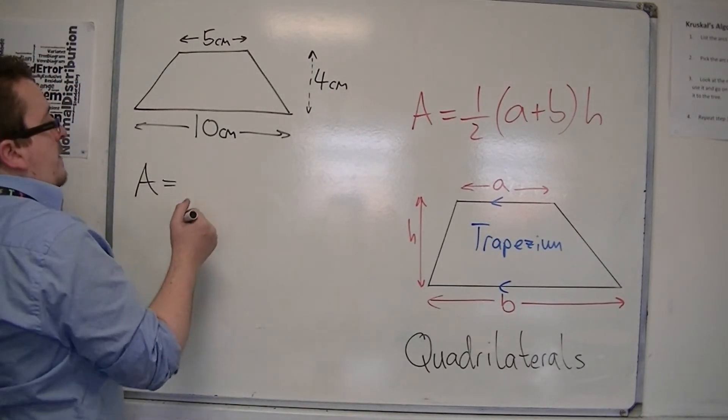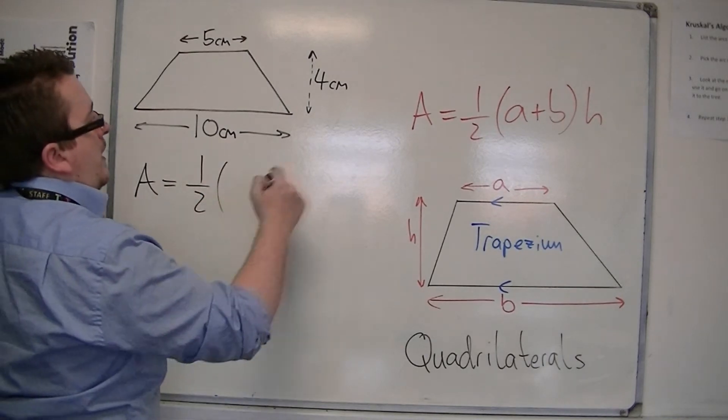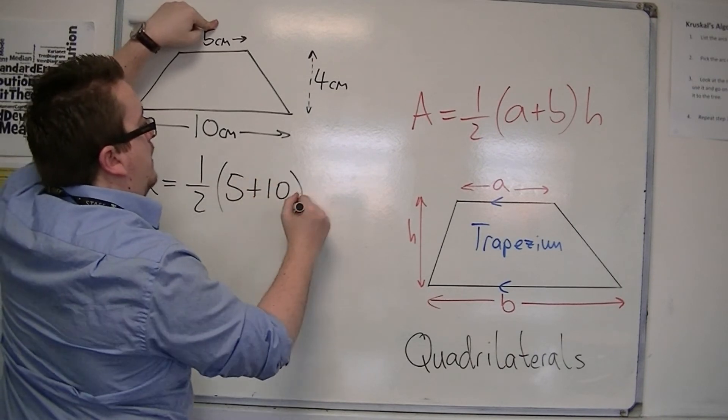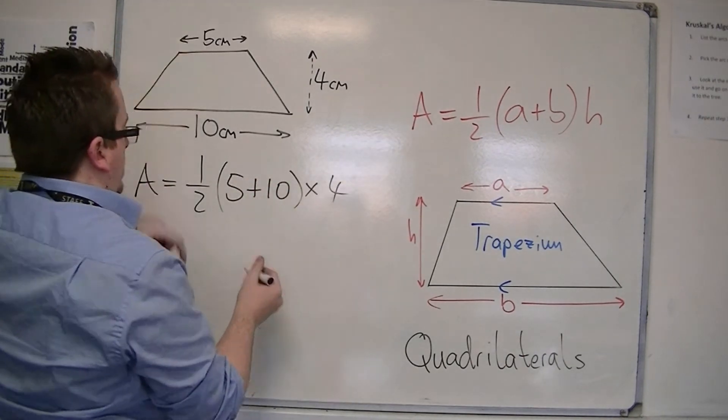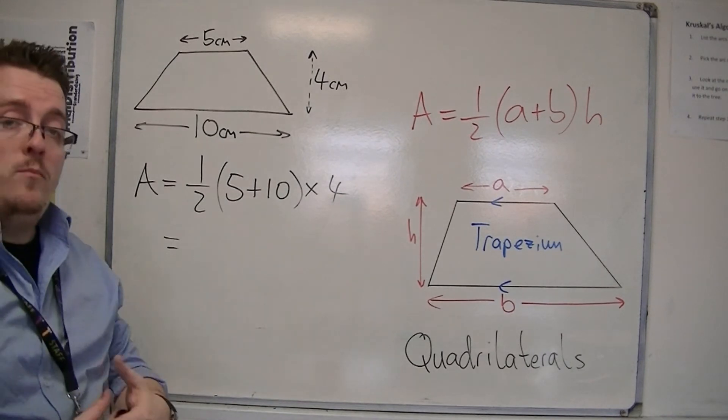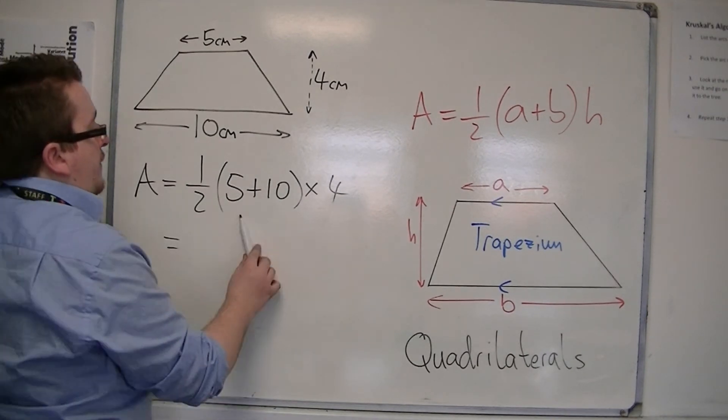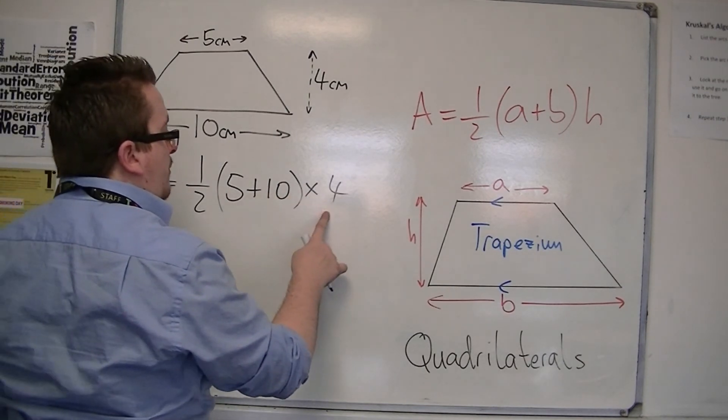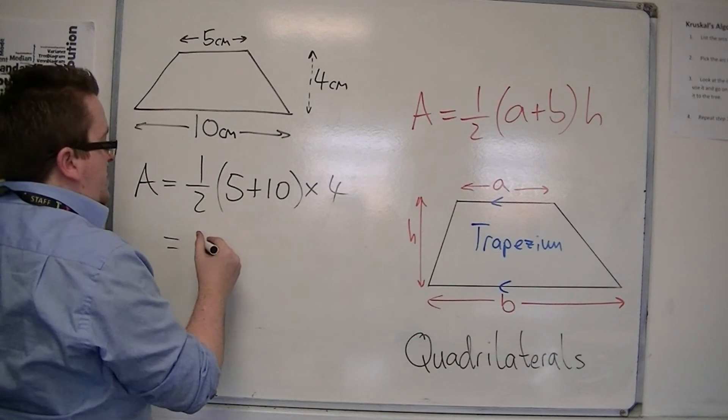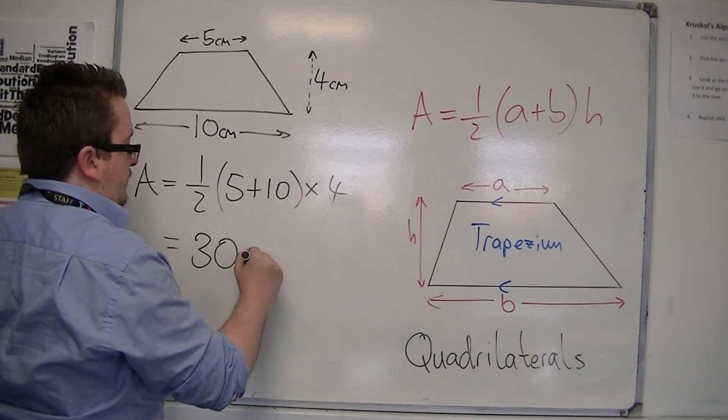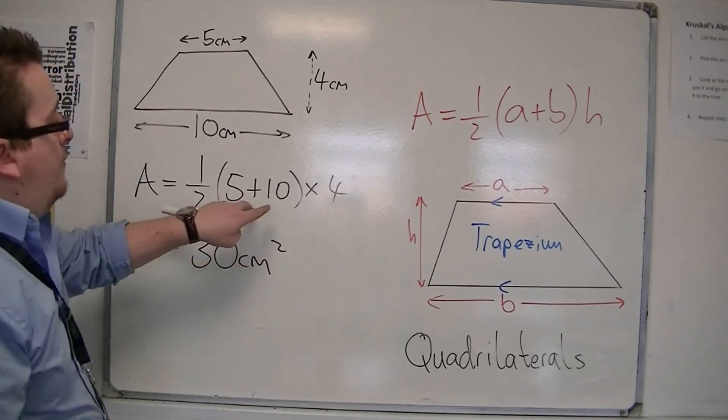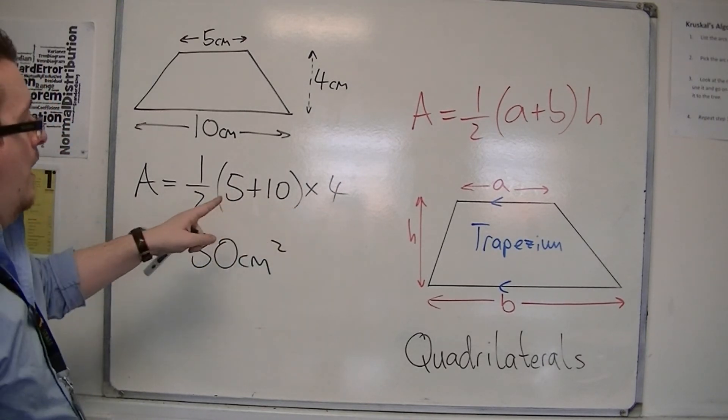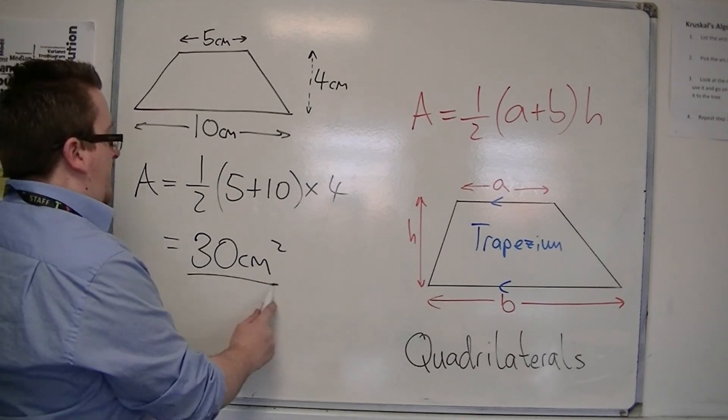this is 1 half, a plus b, so that's a, that's b, so 5 plus 10, lots of h. So remember, you do what's in the bracket first, that's 15, and then you've got times that by 4, so 15 times by 4 is 60, and half of 60 is 30. So you do the 5 plus 10 is 15, times that by 4 is 60, half of that is 30, so 30 square centimeters.